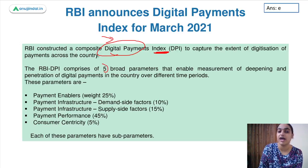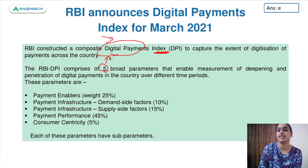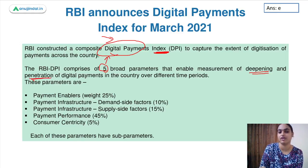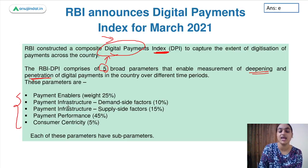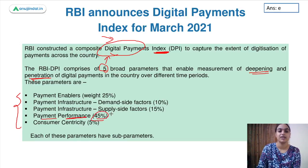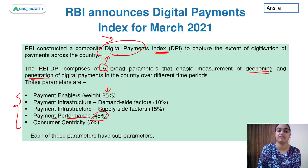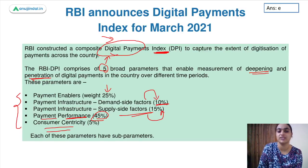It considers 5 parameters through which they can assess the acceptance of digital payments in India. These 5 parameters enable us to measure how deep digital payments are in India and their penetration across different time periods. The highest weightage is given to payment performance at 45%, followed by payment enablers at 25%. Then we have payment infrastructure with demand side factors at 10% and supply side factors at 15%. The least weightage is that of consumer centricity.